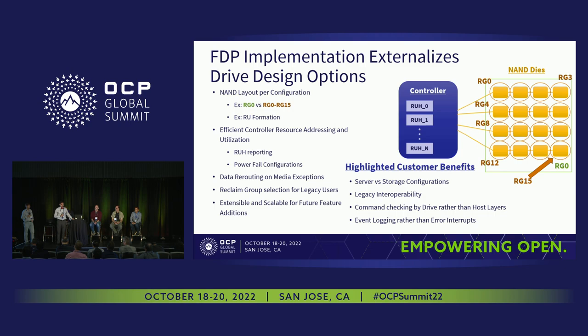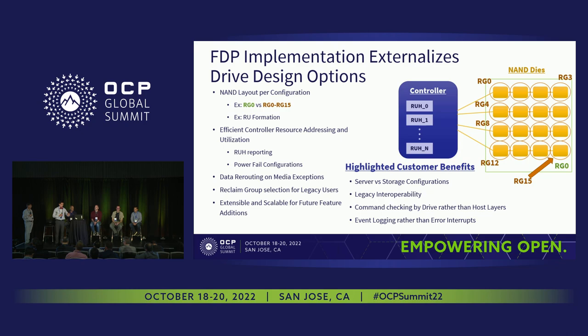RU formation and how they are formed inside RGs is another decision available within the standard. We've focused on super blocks, but as we can see with RG zero or RG per die, we might need just one erase block or one erase block per plane. While we have this versatility in how we lay out our NAND and present it to customers, we also have efficient controller resourcing for addressing and RUH reporting.